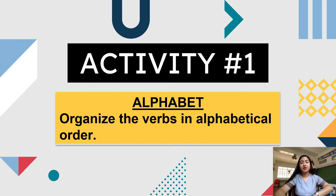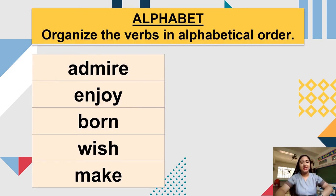Let's have the first activity, which is alphabet. Organize the following verbs in alphabetical order. The verbs are: admire, enjoy, born, wish, and make. I will give you time to do this activity.